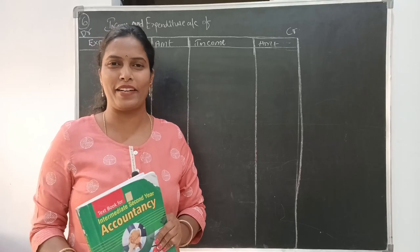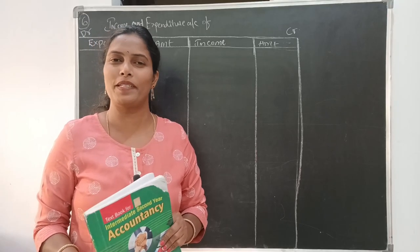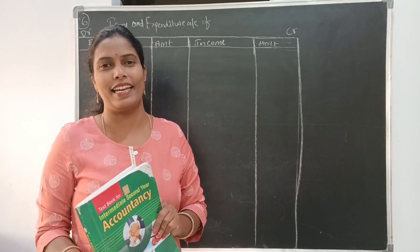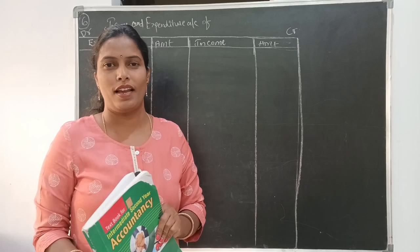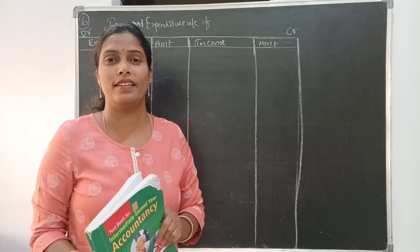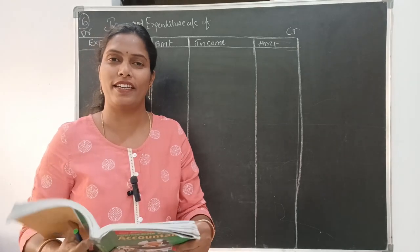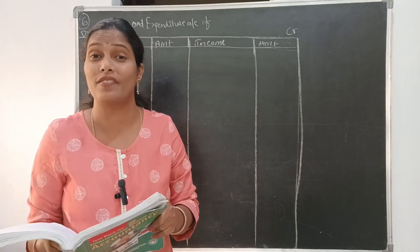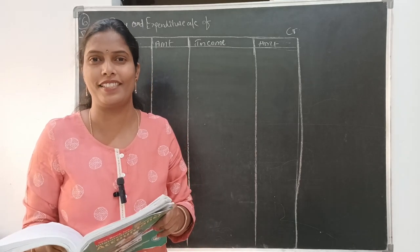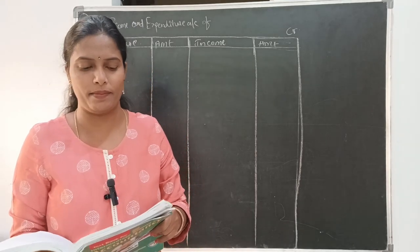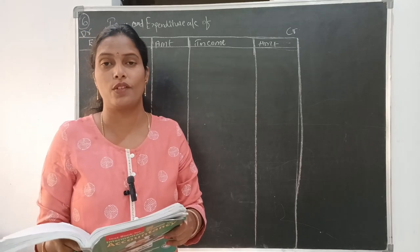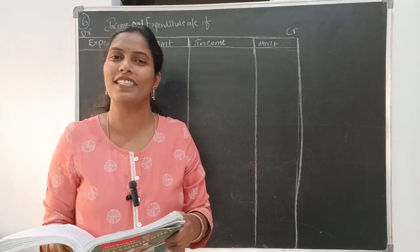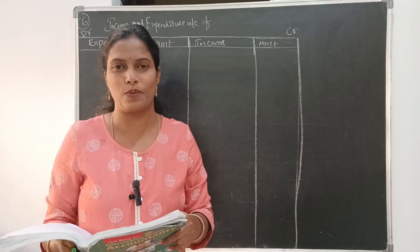Hi students, welcome back to the channel Commerce with Chaitanya. We are in our chapter NPO and we are doing income and expenditure account. In our previous class we successfully finished the 6th problem. Today I am going to solve the 7th problem which is in your textbook.